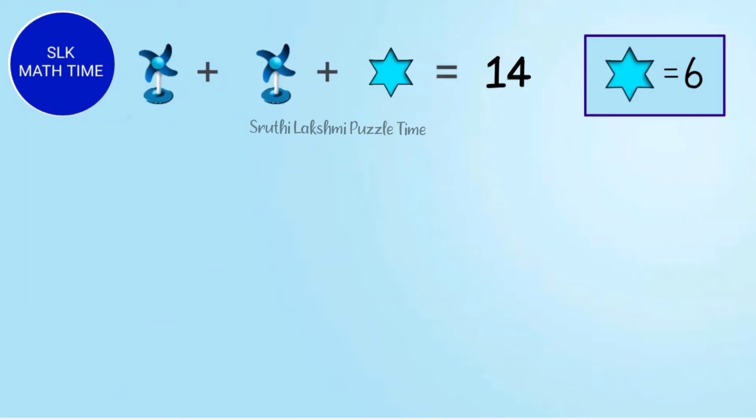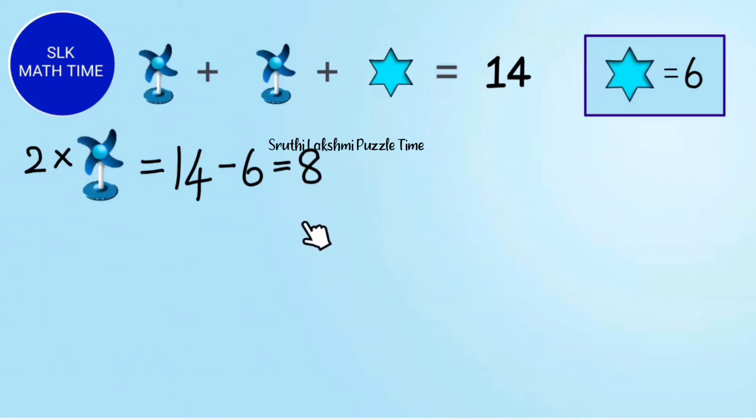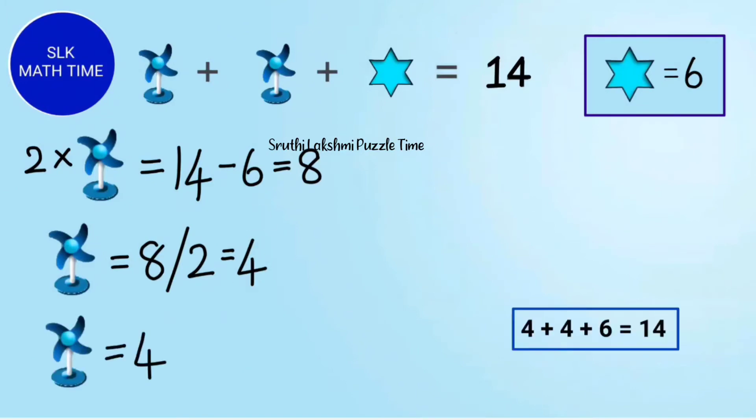Let's see the next equation. Let's substitute the value of star. So when the plus 6 goes to the other side, it becomes minus 6. Next, we do 14 minus 6. 14 minus 6 is 8. So this is the value of 2 fans. To find the value of 1 fan, let's divide 8 by 2. So 8 divided by 2 is 4. So the value of 1 fan is 4. Let's check our answer. So let's substitute the values. 4 plus 4 plus 6 is 14.